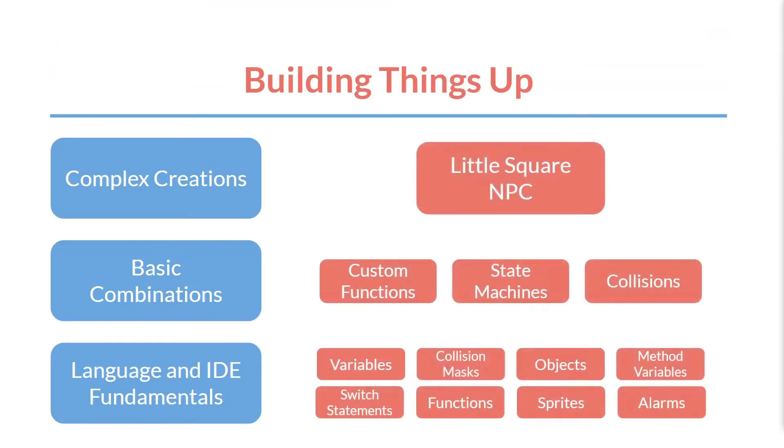And that's because basically everything in code is a complex thing built upon other smaller parts. For example, you have the fundamentals of the language and the IDE. For code, this means things like variables, functions, switch statements, and so on.